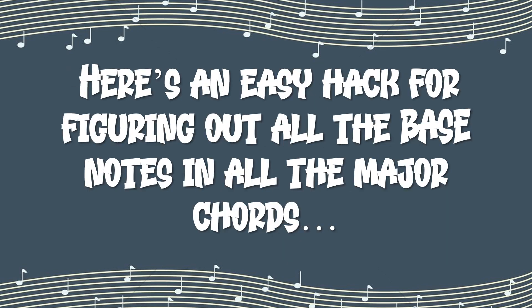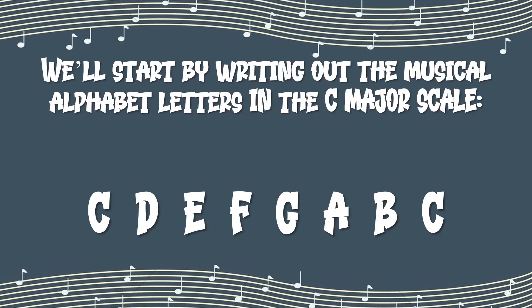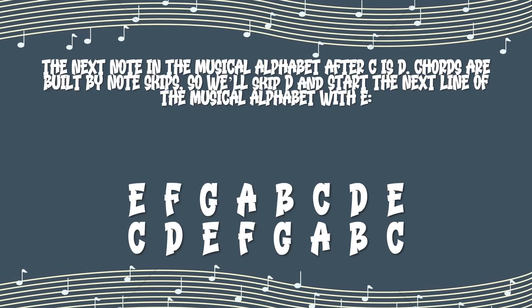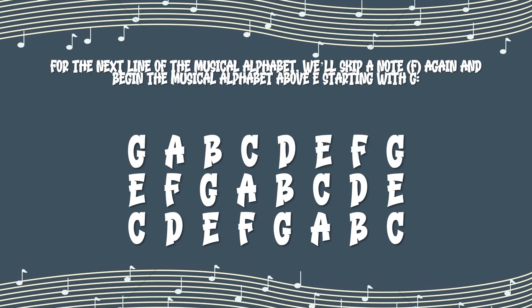Here's an easy hack for figuring out all the bass notes in all the major chords. We'll start by writing out the musical alphabet letters in a C major scale like this. The next note in the musical alphabet after C is D. Chords are built by note skips, so we'll skip D. We'll start the next line of the musical alphabet with E like this. For the next line, we'll skip a note — F — again, and begin the musical alphabet above E starting with G.